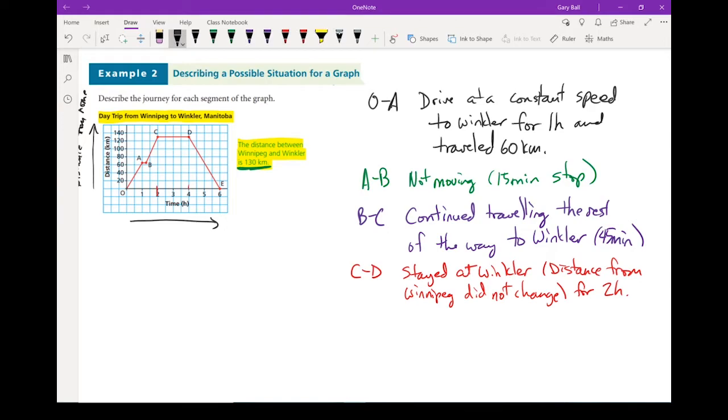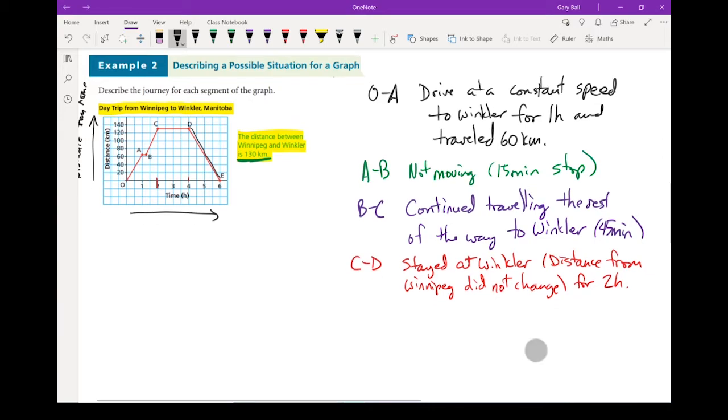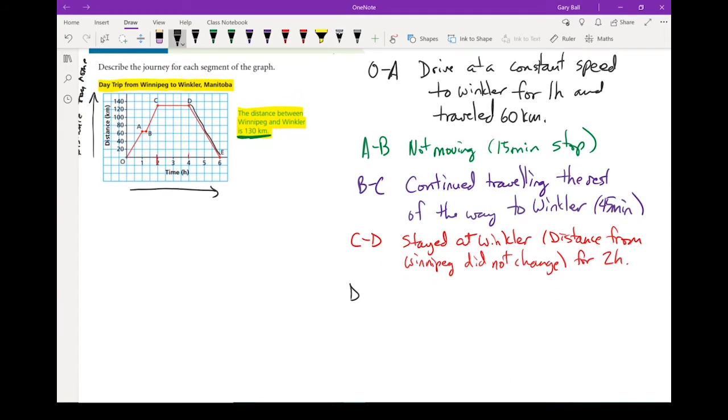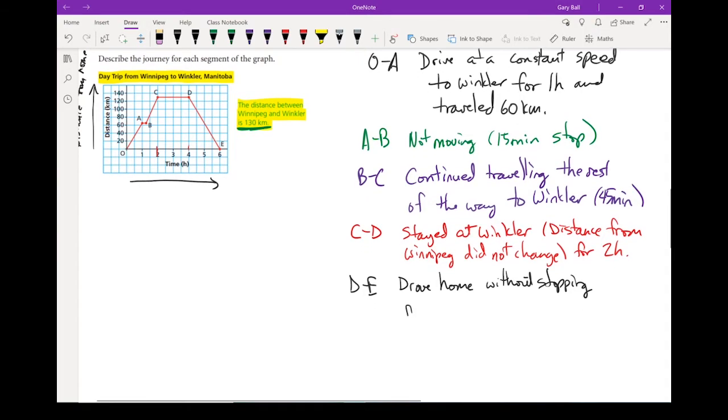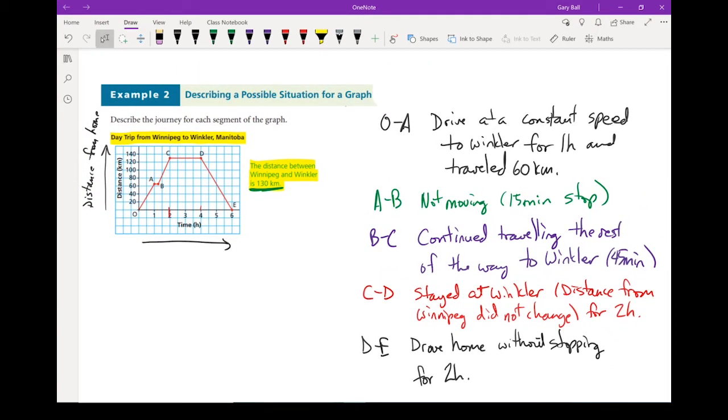And let's do our last section, which is D to E. And in that section, they drove home without stopping. You'll notice the distance keeps changing at a constant rate, which means their speed must be at a constant rate. Because it's straight, we're assuming a constant rate. And they did that for 2 hours, from 4 till 6. And that, describing the journey for each section of the graph.